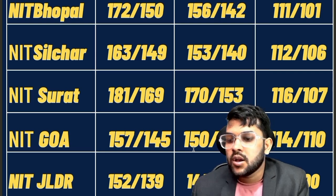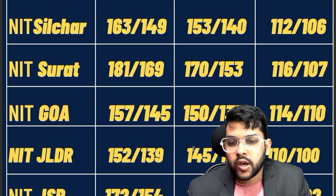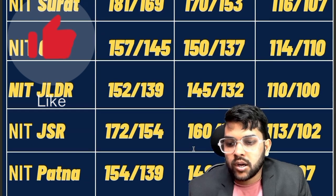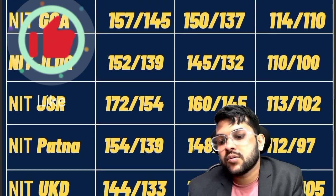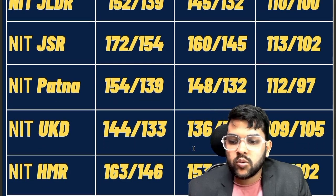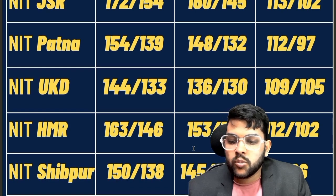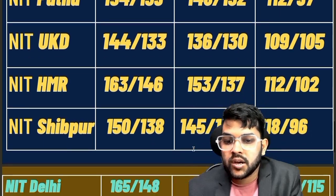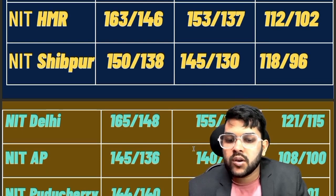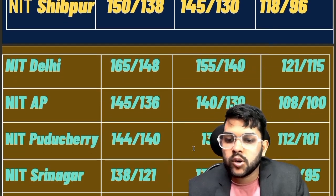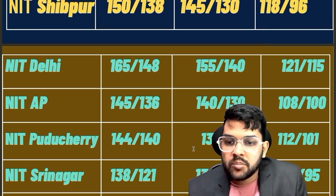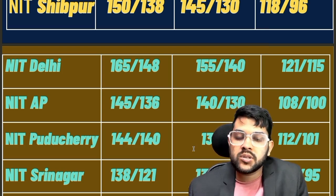For Jalandhar: 152, 145, 110. For Jamshedpur: 172, 160, 113. For Patna: 154, 148, 112. For Uttarakhand: 144, 136, 109. For Hamirpur: 163, 153, 112. For Sitapur: 150, 145, 118. For Delhi: 165, 155, 121. For AP: 145, 144, 137, 121 — these are for male students.